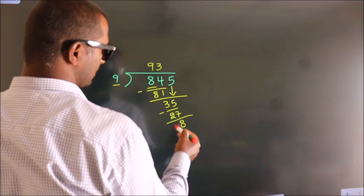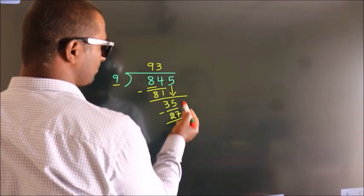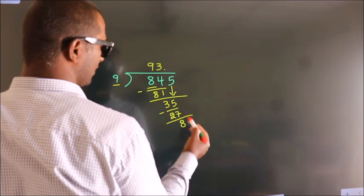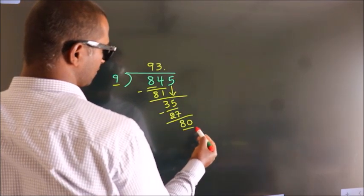After this, there are no more numbers to bring down. So what we do is put a decimal point and take 0, giving us 80.